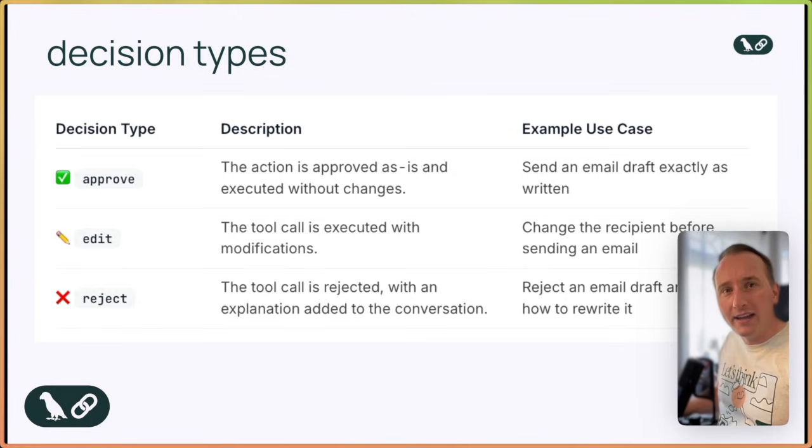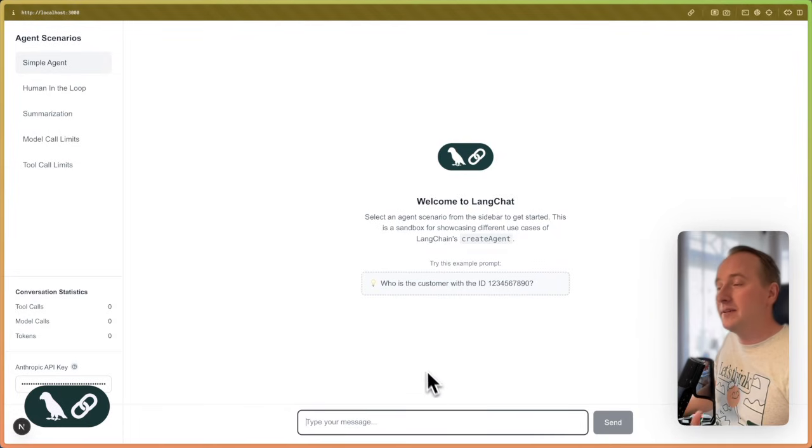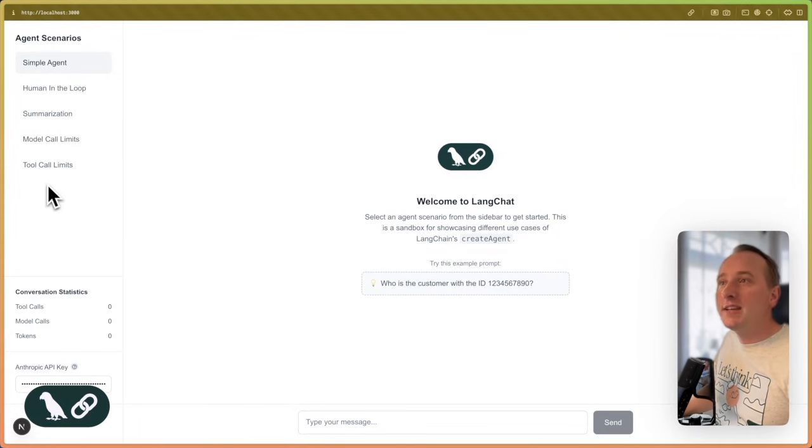Let's check out the React application and see how it looks like in real life. So in this basic application, I have a chat interface that allows me to trigger different agents using the simple text area field. On the left side, you find different agent scenarios that help me to visualize agents' behavior.